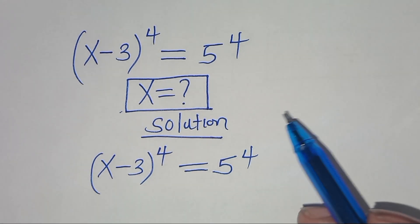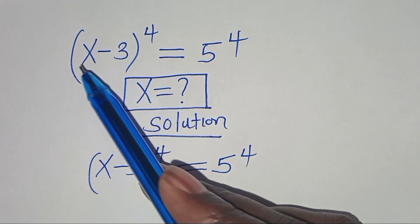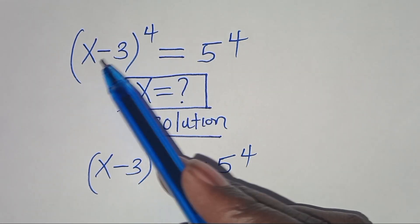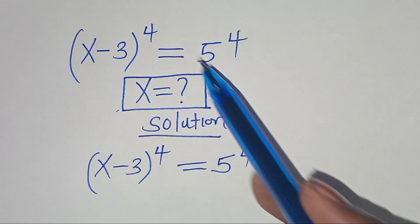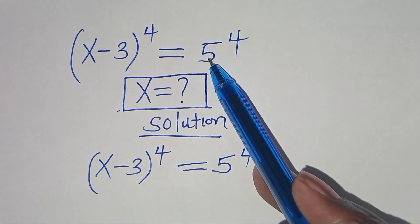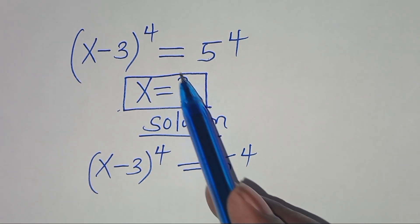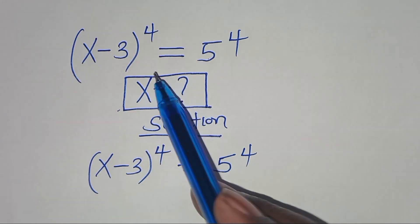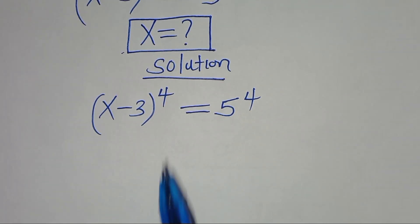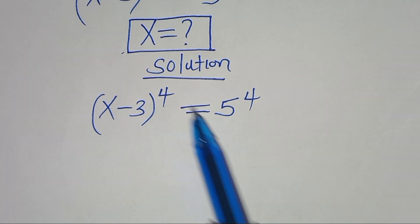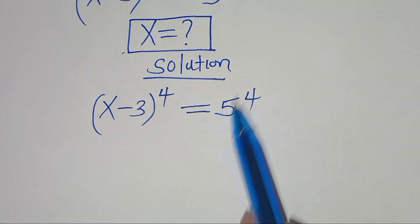Hello everyone, you're welcome to solve this nice algebra problem which is x minus 3 to the power of 4, and this is equal to 5 to the power of 4. So what are the values of x? We have x minus 3 to the power of 4, this is equal to 5 to the power of 4.